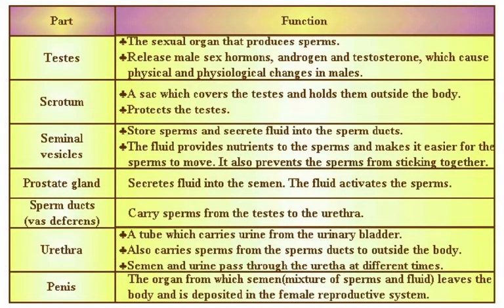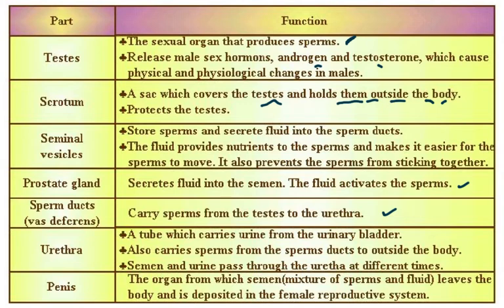Here is a functions table — you can pause and make notes. Testes: the sexual organ that produces sperm via meiosis, and releases male sex hormones androgen and testosterone. Scrotum: a sac that covers and protects the testes outside the body. Prostate gland: secretes fluid into the semen that activates the sperms. Sperm ducts: carry sperms from the testes to the urethra. Urethra: carries urine from the urinary bladder and also carries sperms outside the body — semen and urine pass through at different times, controlled by a sphincter muscle. Penis: the organ from which semen leaves the body and is deposited in the female tract during sexual intercourse.